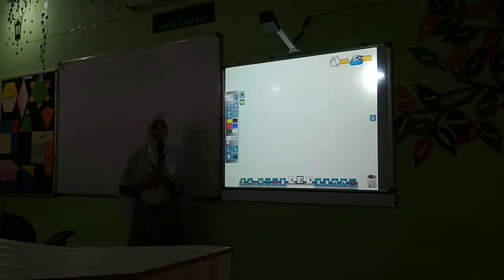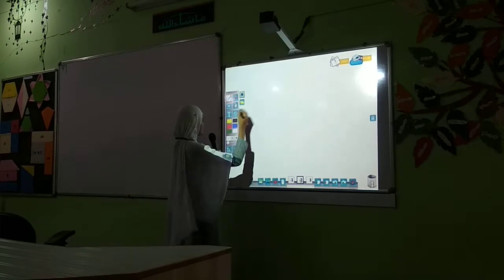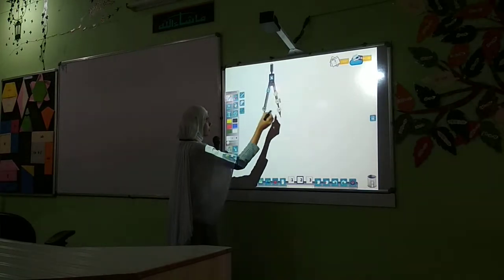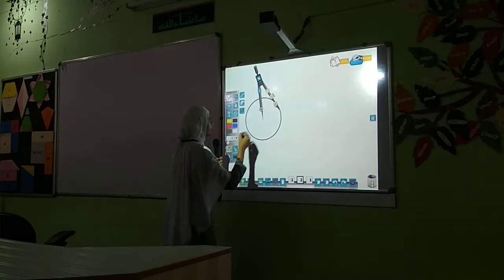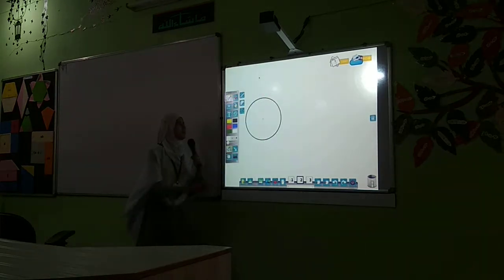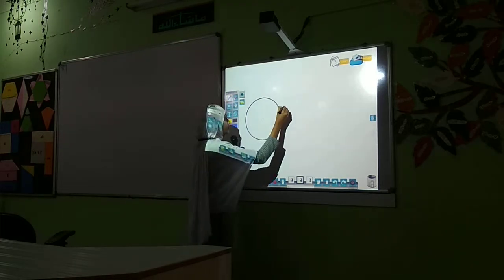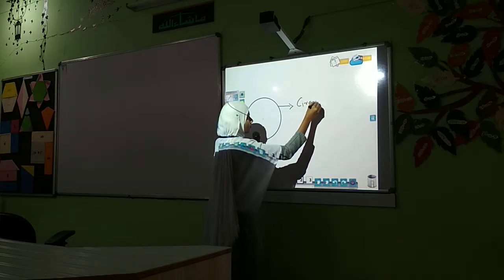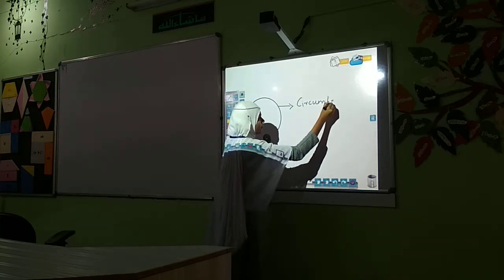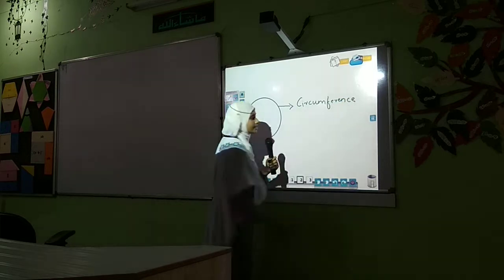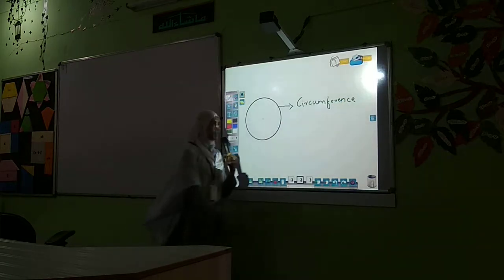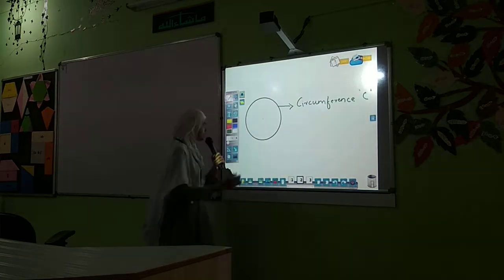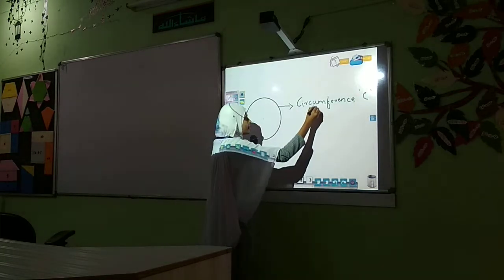Next is the circumference of a circle. This is the circle, and the outer layer or boundary is called the circumference. This is generally denoted as C, and it is also known as the perimeter of the circle.